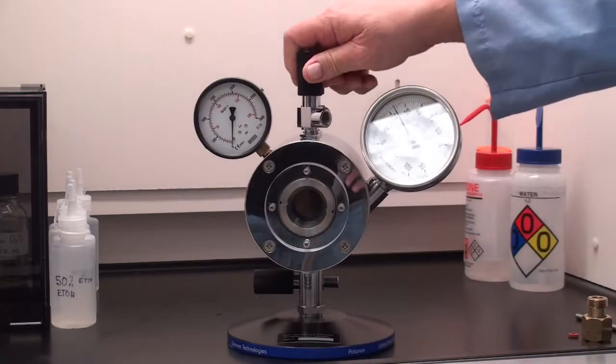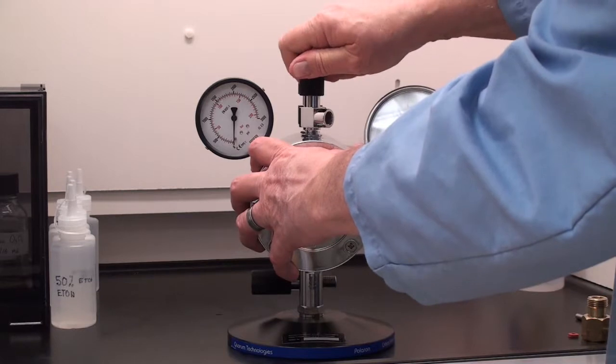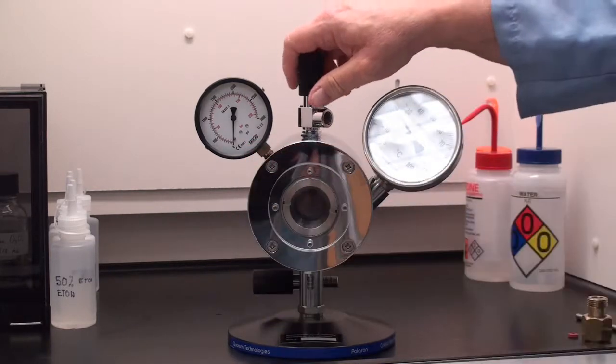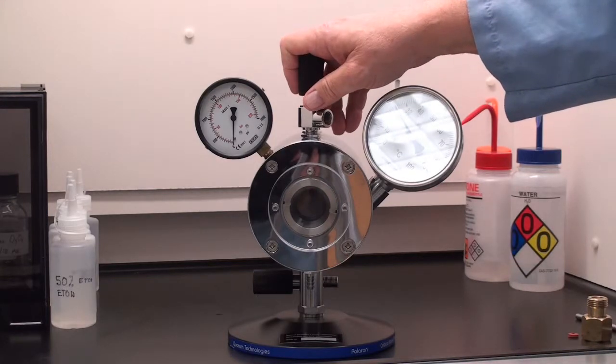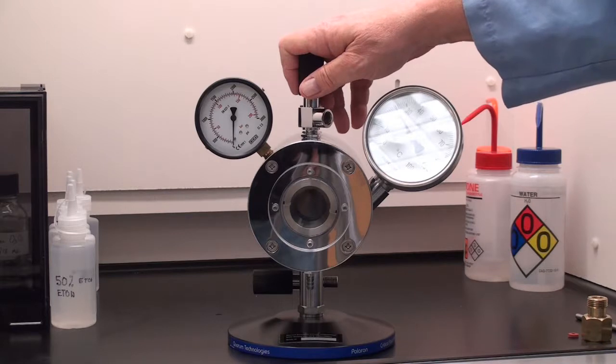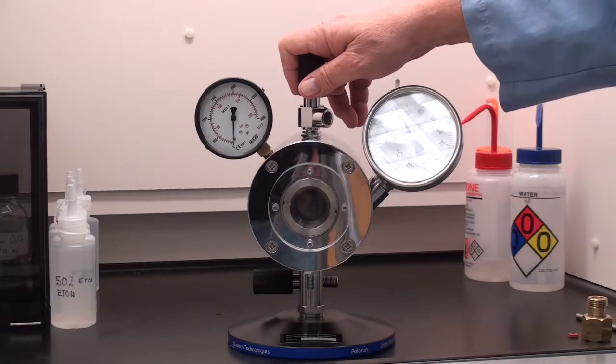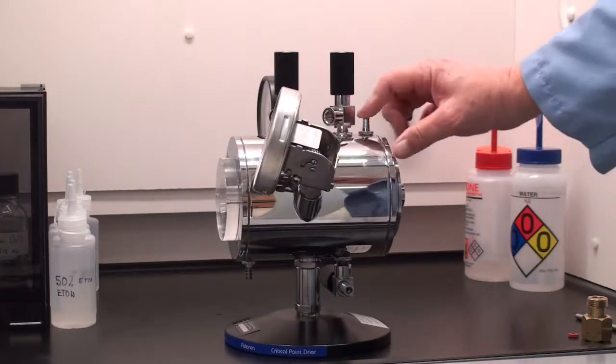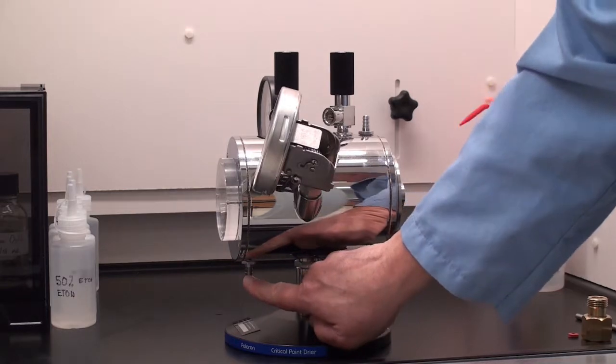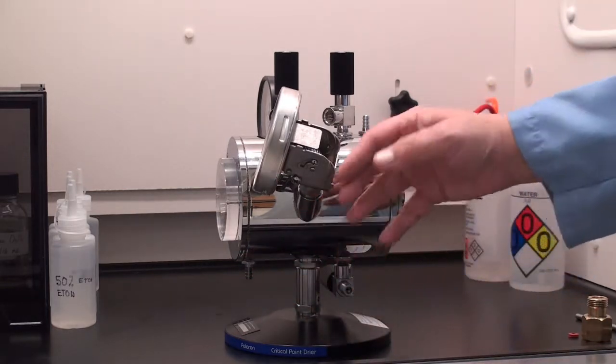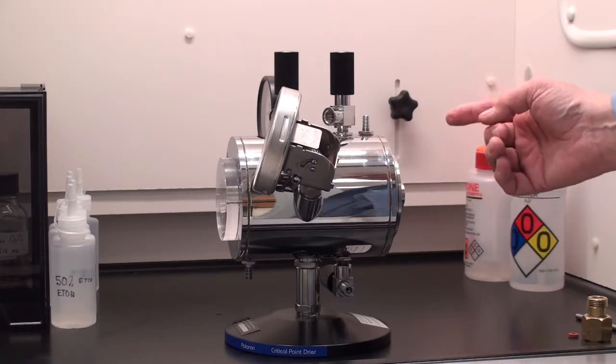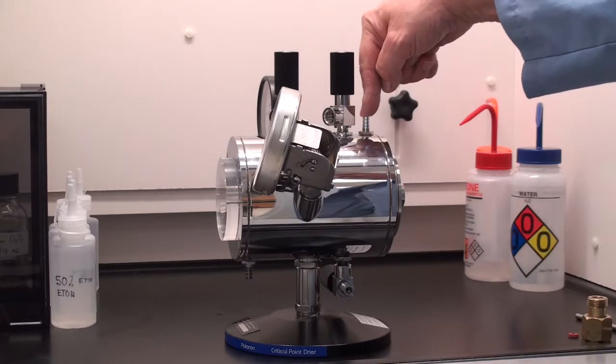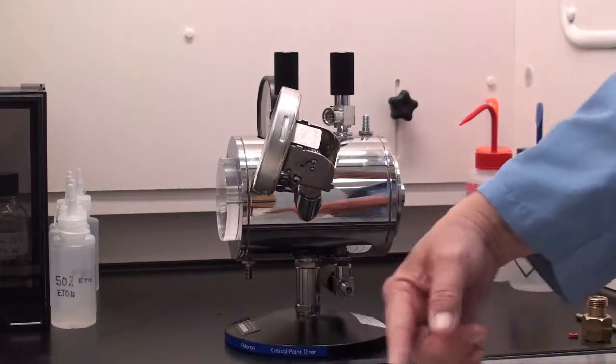All these valves are somewhat delicate. You want to open and close them without having to use any wrenches or items like that. They are very sensitive. If you just hand tighten them they will give you a long life of use. Also here and here is the water inlet for the jacket around the chamber which does all the heating and cooling. So you would plumb water in one side and take it away on the second.